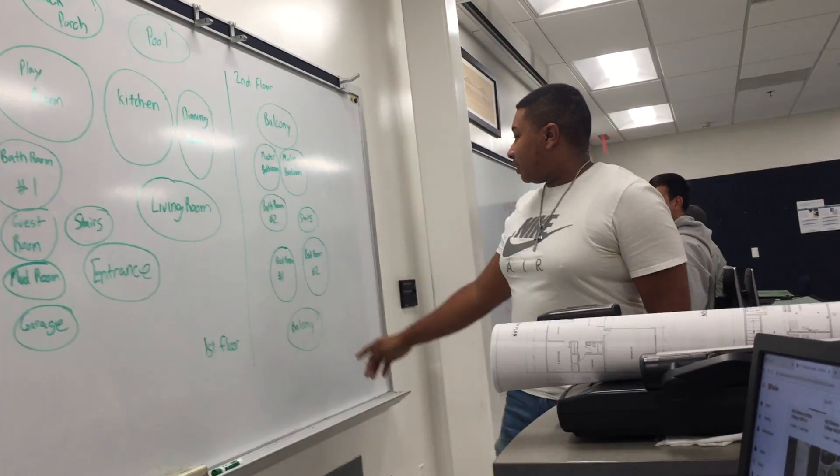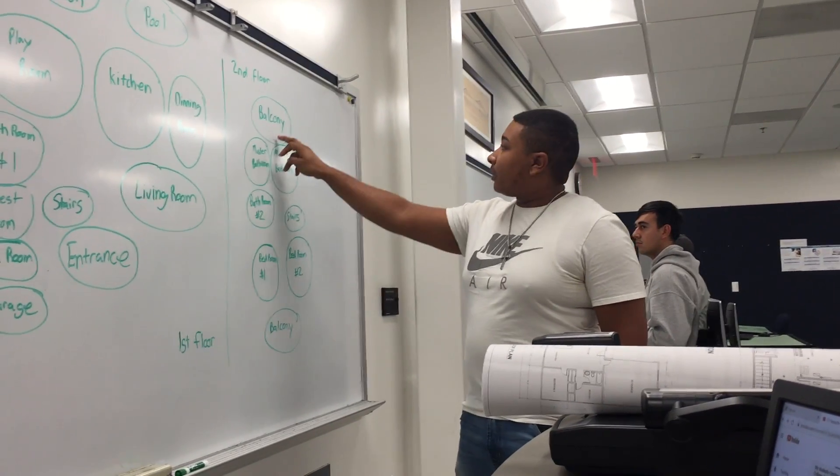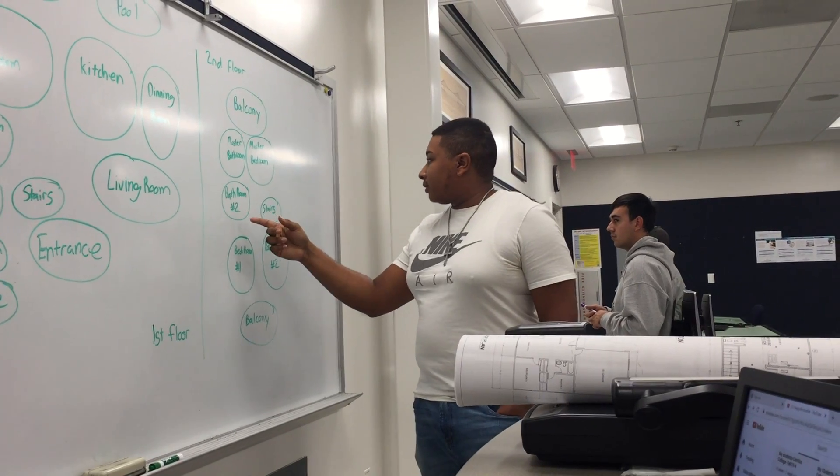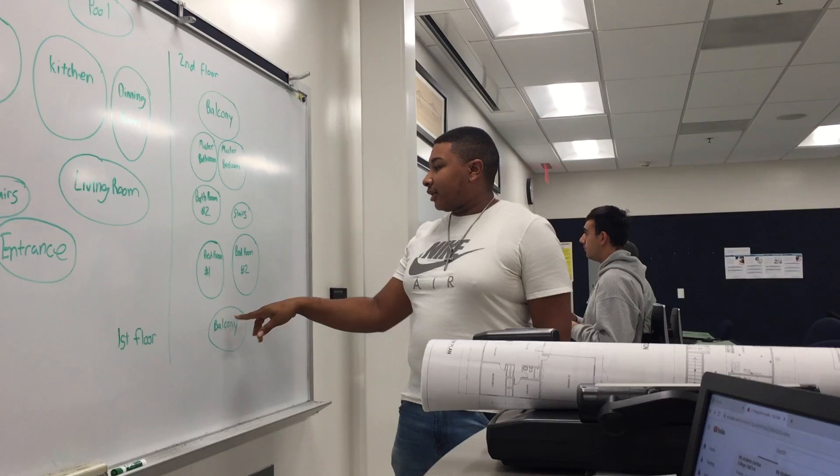Moving on to the second floor, there's the master bedroom with the master bathroom with its own balcony. And another bathroom upstairs with two bedrooms that share a balcony.